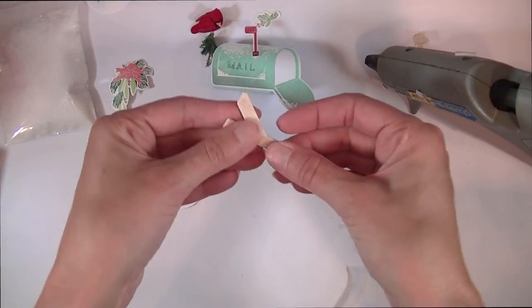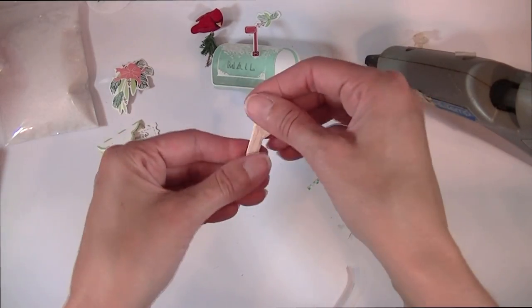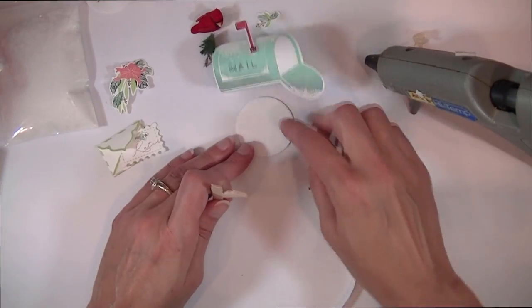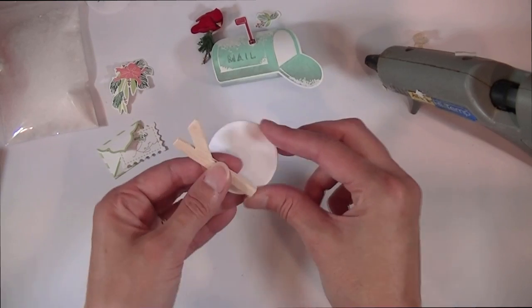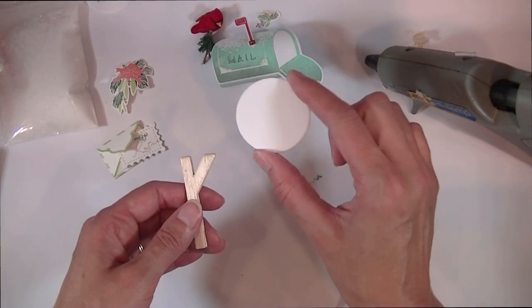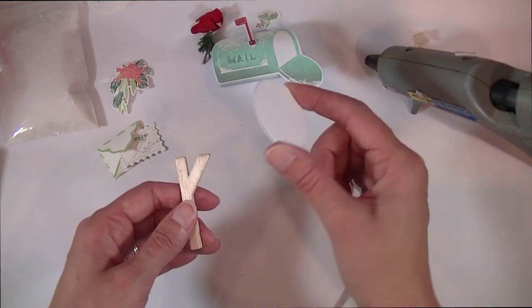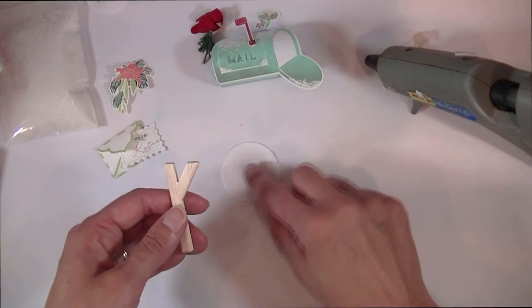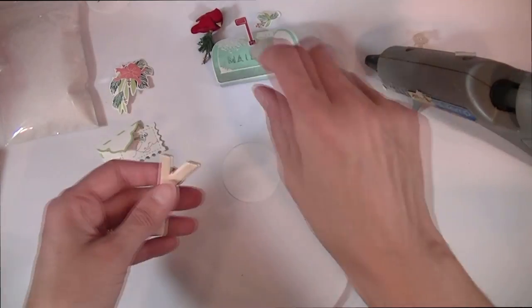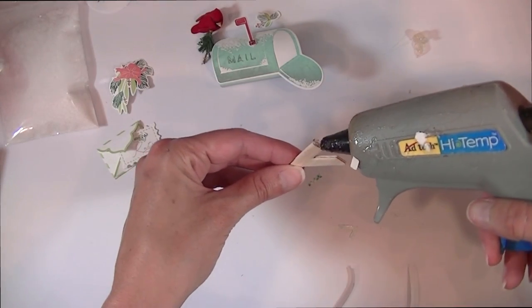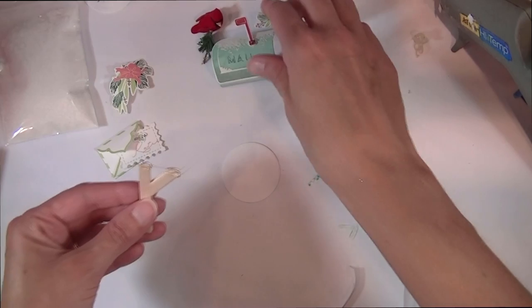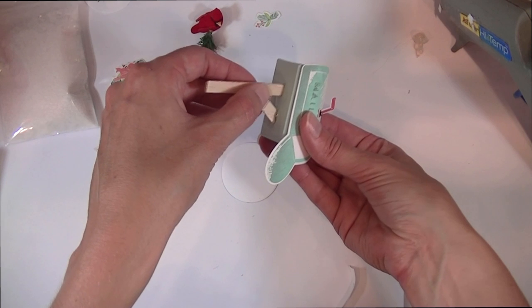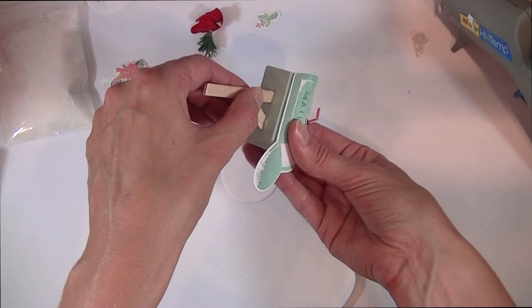And I have my hot glue gun plugged in here because I found that's going to be the easiest way to get everything assembled—to get the post onto the actual mailbox and onto the base. So speaking of base, I have a one and three-quarter inch circle here, which was cut using a die not from the kit. I cut it from Paper Trey tag stock, which is a super heavy cardstock, just because I wanted it to give a little more substance at the base of my mailbox. So I'm going to add the post to the mailbox using some hot glue, and just hold it in place while the glue cools.